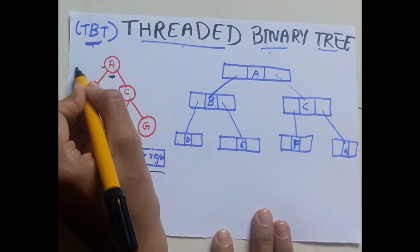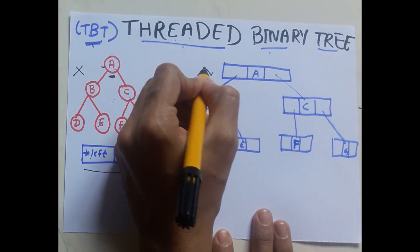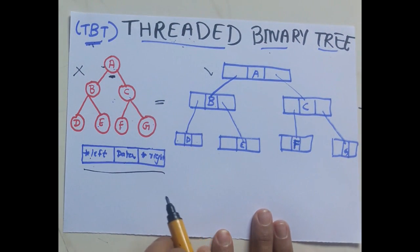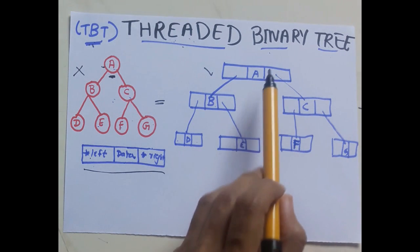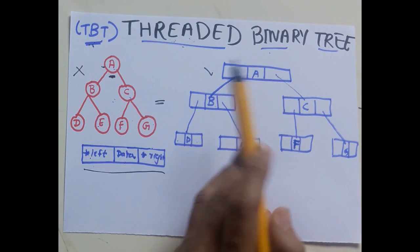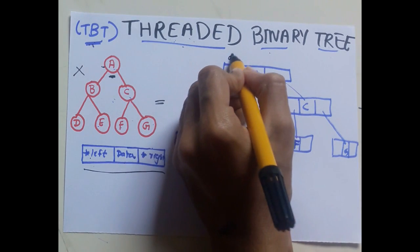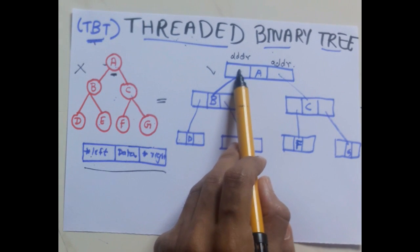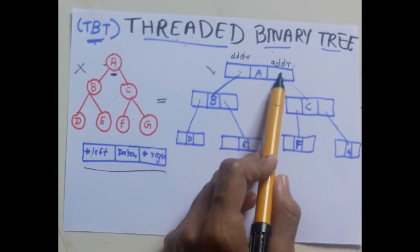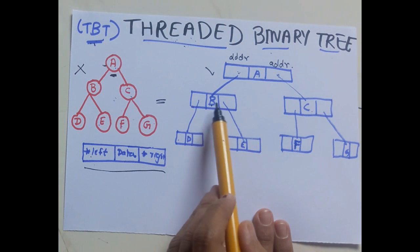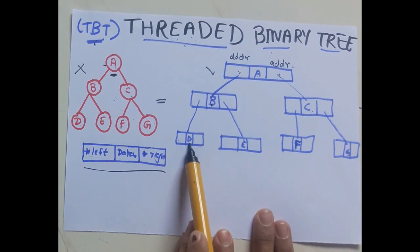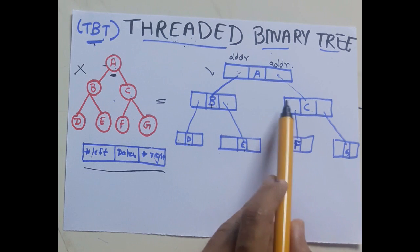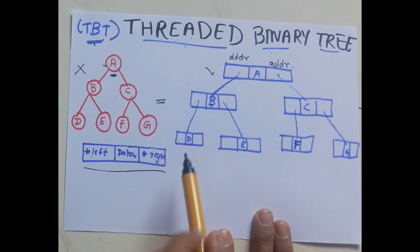In a threaded binary tree, we will represent it in its node form. Both these binary trees are equal. You can see there are three fields: the data field and two pointer fields which will hold addresses. The left pointer field will hold the address of node B, the right pointer field will hold the address of node C. Similarly, left pointer of node B holds address of node D and right pointer holds address of node E, and similarly for node C.